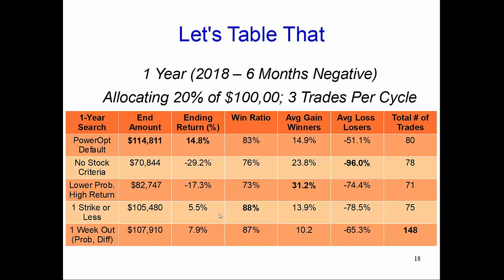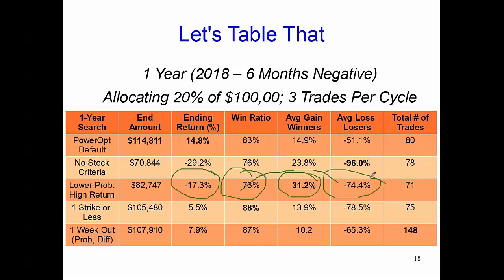But if you say, 'I want a better return, so I'll go down to 70-to-75% probability,' your average winners jump to 31.2%, but you're only right 73% of the time. Long-term it doesn't pan out. And if you start managing more aggressively — closing at a 30% or 40% trigger to avoid the 74% loss — your win rate drops to about 62%. You will not be successful even with a 30% average return in that case. That's the nature of spread trades.